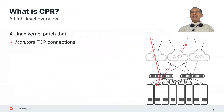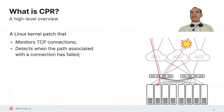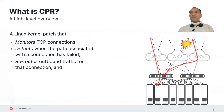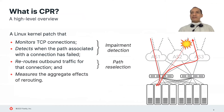CPR is a Linux kernel patch that monitors TCP connections, detects when the path associated with a connection has failed, reroutes outbound traffic for that connection, and measures the aggregate effects of rerouting. We now look at the two main functions of CPR: impairment detection and path reselection.